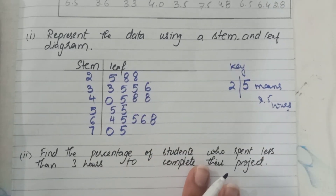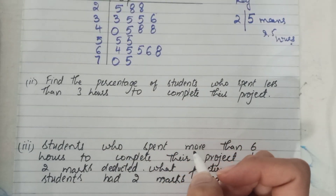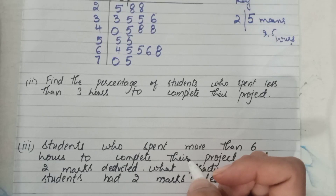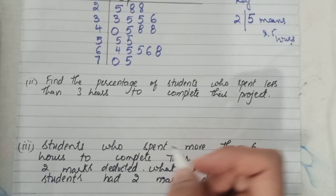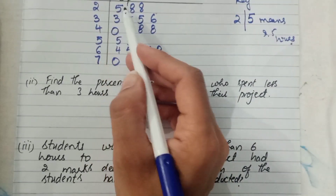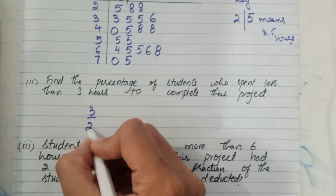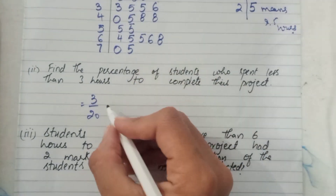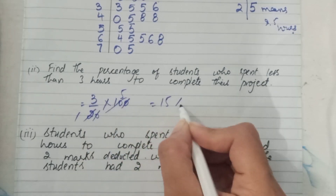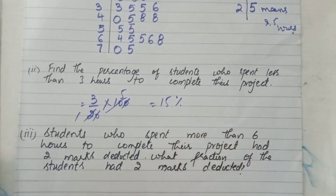Part two: find the percentage of students who spend less than 3 hours to complete their project. From the diagram, only 3 students spend less than 3 hours, and the total number of students is 20. To find the percentage: (3/20) × 100 = 15 percent.